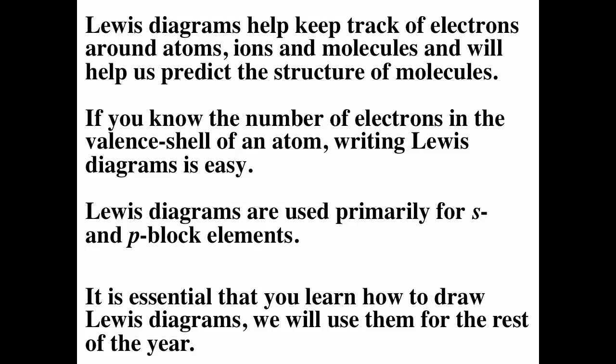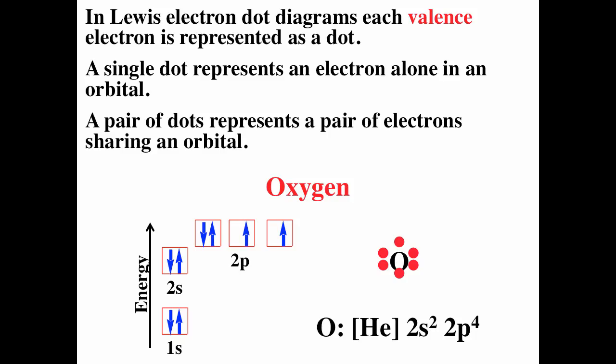Lewis diagrams are primarily used for the S and P block. We do not typically use Lewis diagrams for transition metals, lanthanides, or actinides. But it's essential that you learn how to draw Lewis diagrams — you will use them for the rest of your chemical career. As long as you're doing chemistry, you're going to use Lewis electron dot diagrams.